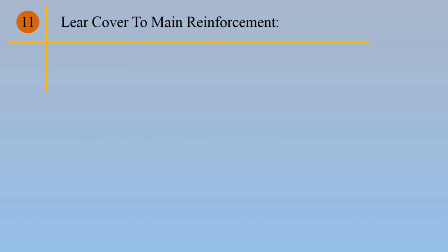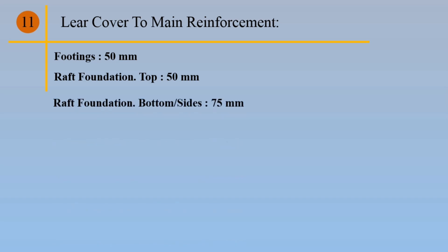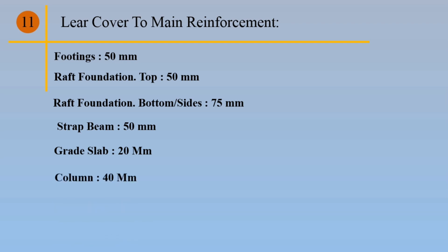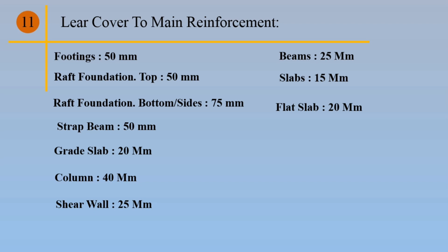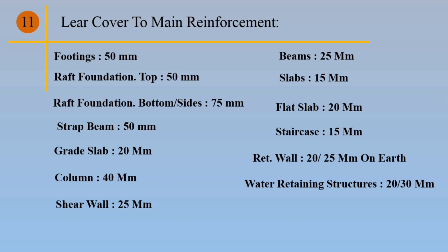Point 11: Clear cover to main reinforcement. Footings is 50mm. Raft foundation top is 50mm. Raft foundation bottom and sides is 75mm. Strap beam is 50mm. Grade slab is 20mm. Column is 40mm. Shear wall is 25mm. Beams is 25mm. Slabs is 15mm. Flat slab is 20mm. Staircase is 15mm. Retaining wall is 20-25mm on earth. Water retaining structures is 20-30mm.